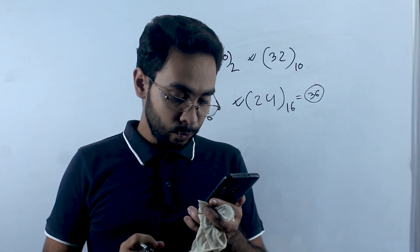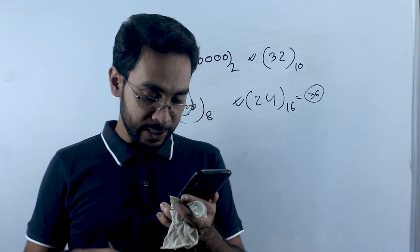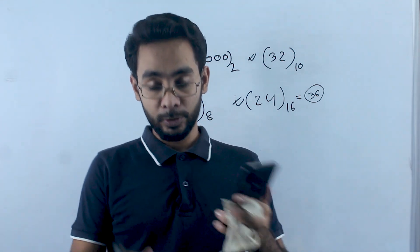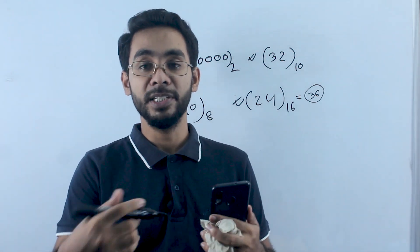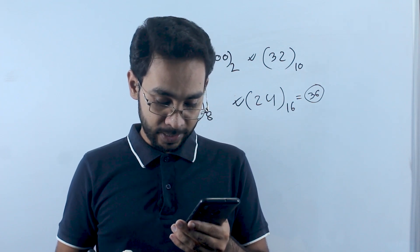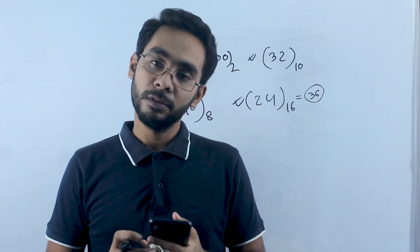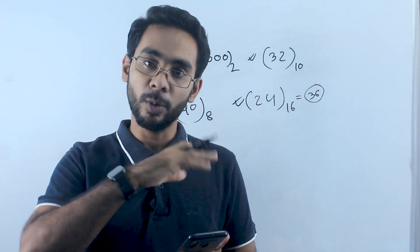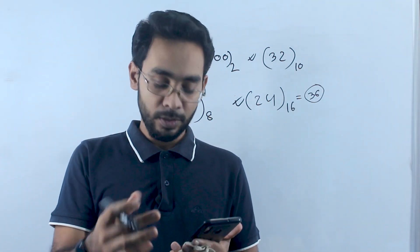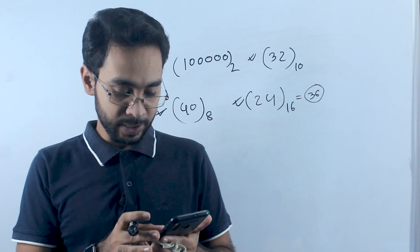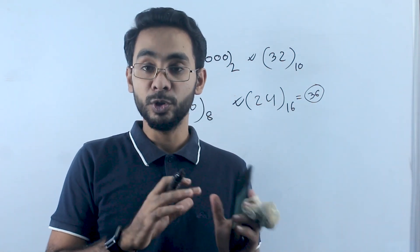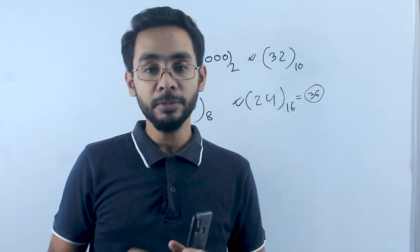This is the source code. This is the source code from the machine. I will show you: compiler, interpreter, assembler, shop code. Swab. Translator. Source code. Machine code. Rupantor.